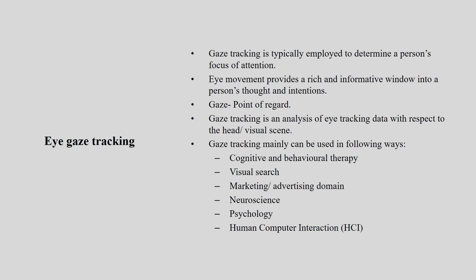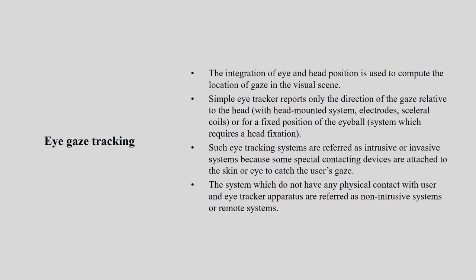Gaze tracking can mainly be used in: cognitive and behavioral therapy, visual search, marketing and advertising domain, neuroscience, psychology, and human-computer interaction. The integration of eye and head position is used to compute the location of gaze in the visual scene. Suppose your neck is moving but your eyeball is in a fixed condition — your gaze is changing. If you want to keep your gaze fixed while your neck is moving, you have to change your eyeball direction.